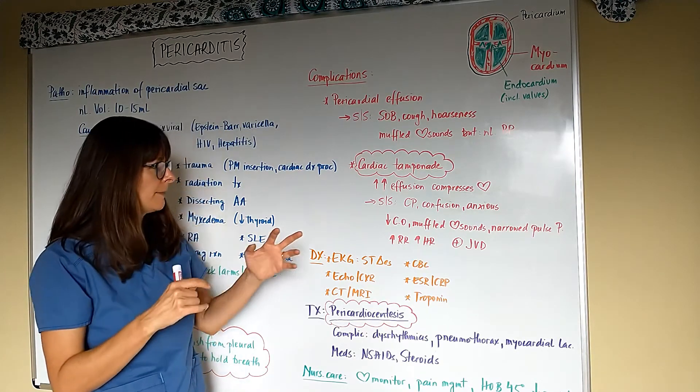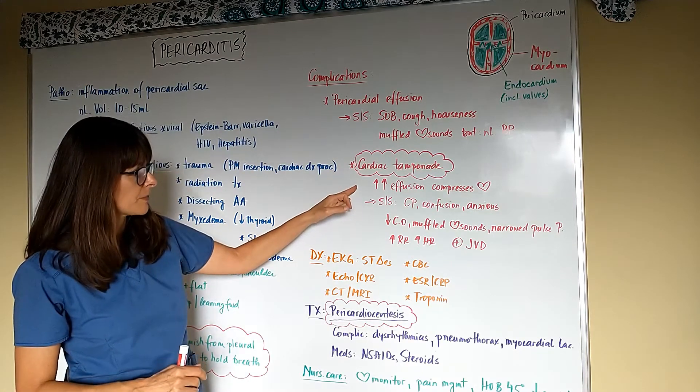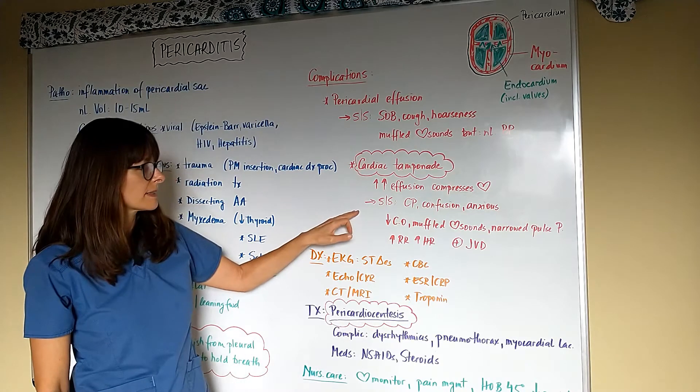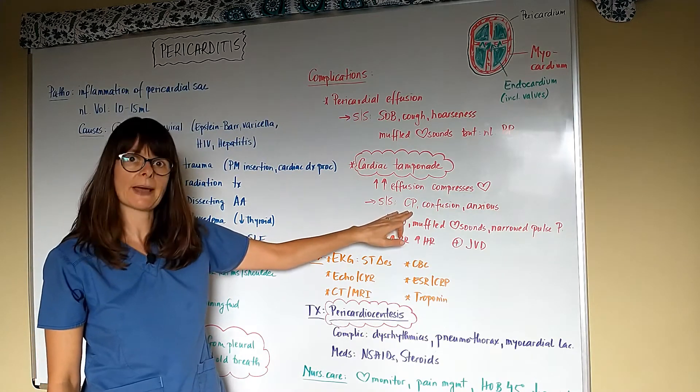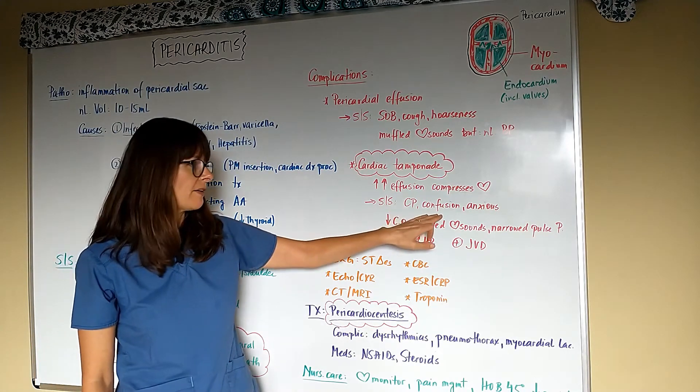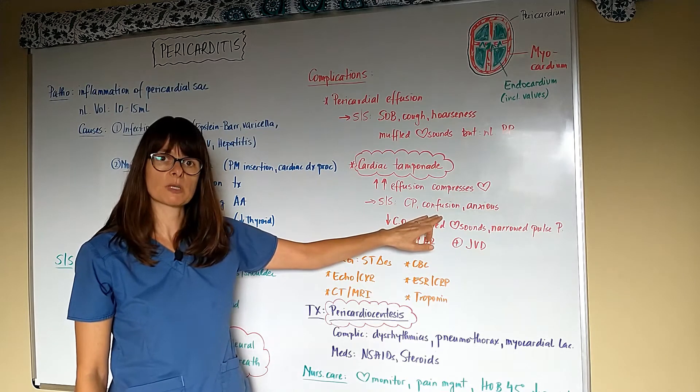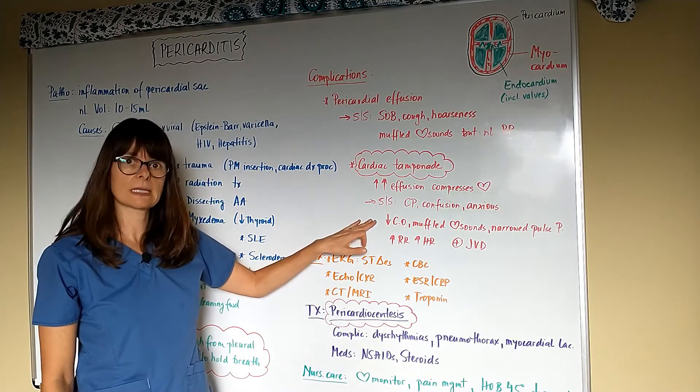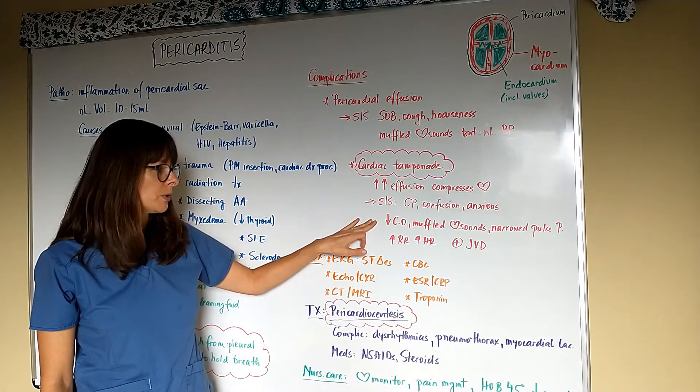So this increase of the effusion compresses the heart. Signs and symptoms again is chest pain, but now the patient will be more ill. They might have signs and symptoms of decreased perfusion to the brain such as confusion and anxiety.